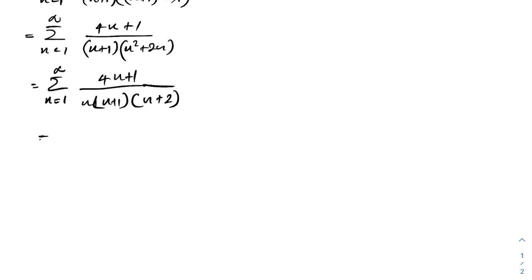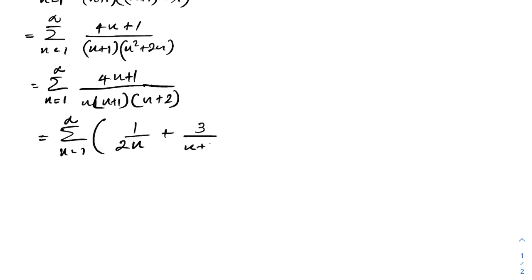We can find the partial fractions using the cover method. From n equals 1 to infinity: plugging in n equals 0 gives 1/2, so we have 1 over 2n; then 3 over (n plus 1); then minus 7/2, so minus 7 over 2 times (n plus 2).